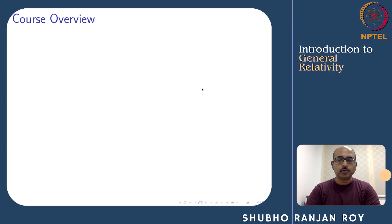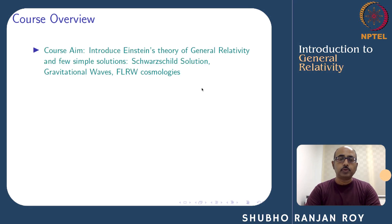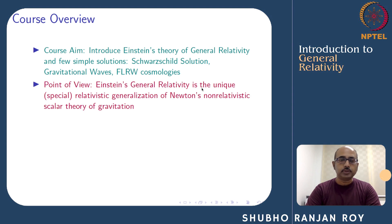I will first give you the course overview. The aim of the course is to introduce Einstein's Theory of General Relativity and study a few simple solutions thereof, namely the Schwarzschild solution, gravitational waves, and FLRW cosmologies. The main point of view adopted in this course is that Einstein's General Relativity is the unique special relativistic generalization of Newton's non-relativistic scalar theory of gravitation.